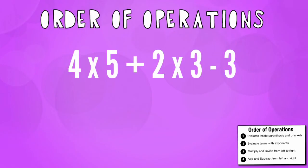So let's look at this expression. We have 4 times 5 plus 2 times 3 minus 3. When we do this, we want to immediately do our multiplication first because there are no parentheses and there are no exponents.